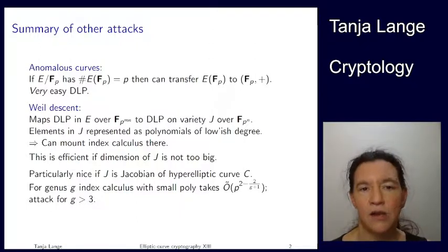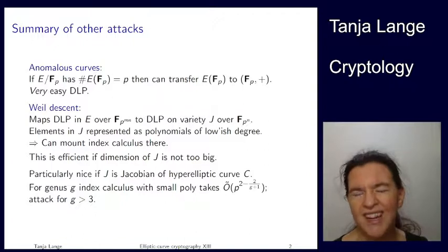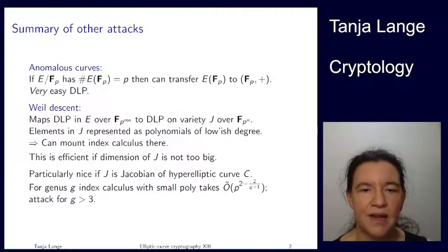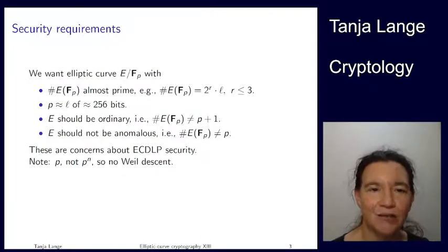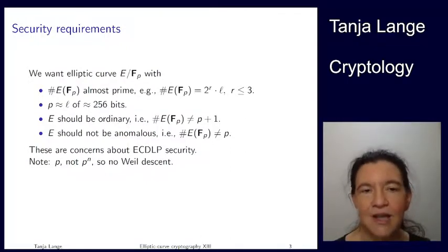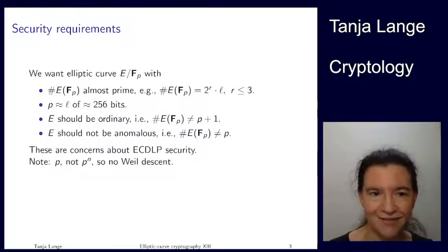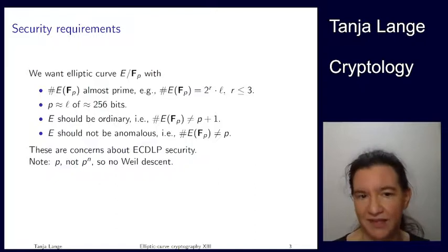Summary of attacks: anomalous curves are really, really scary. Weil descent is saying you have an easy way to avoid it by not using composite fields. There's a lot of math involved in it, but you can relatively easily understand how it works and where you land and then just exclude it by using prime fields. So what are the security requirements? I said in the beginning, you as a designer actually have the power to choose an elliptic curve. So what do you want? You want to have a curve over a prime field. I'm just flat out rejecting any extension field, so we don't have to deal with Weil descent.